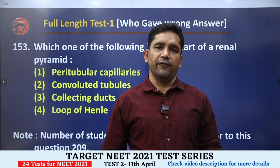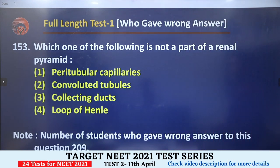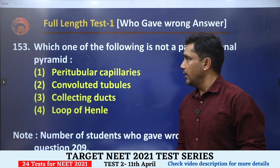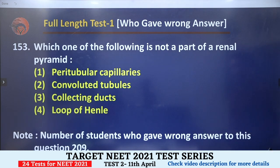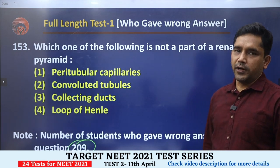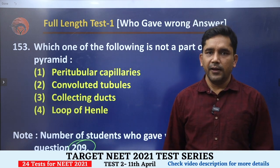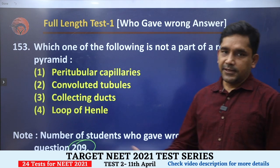Hello everyone, welcome to New Light Neat channel. Today we are going to discuss the silly mistakes attempted by the maximum number of students in our All India Poland test held on 1st of April. Question 153 was attempted wrong by 209 students. This was the first free test and thousands of students appeared. Heartfelt thanks for making the test series successful.